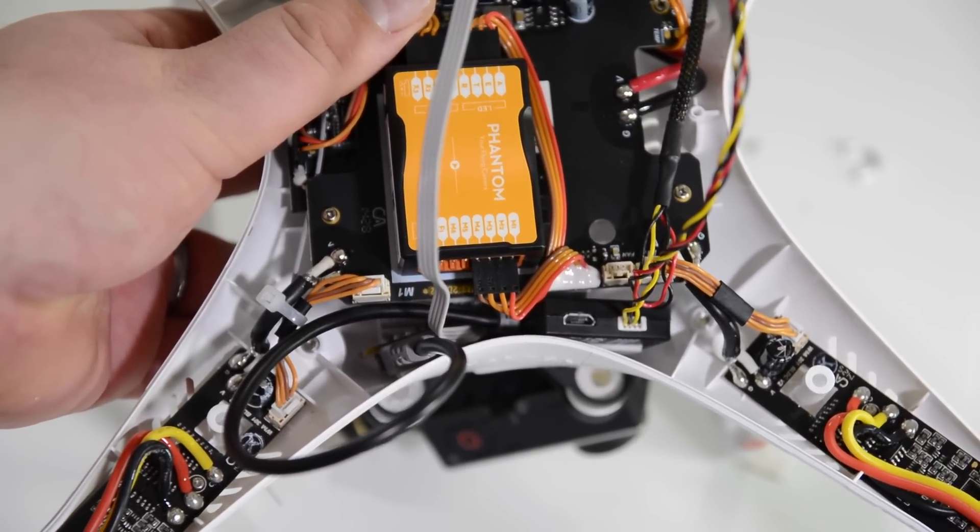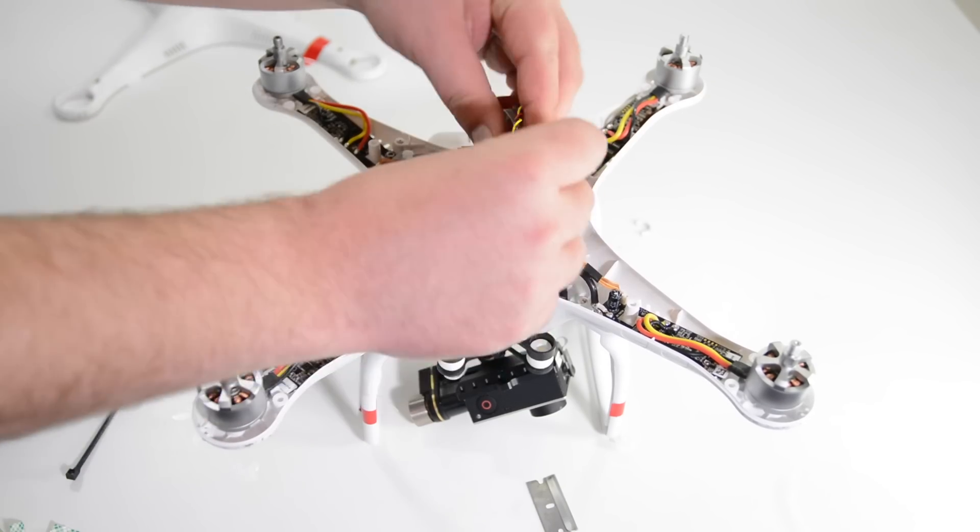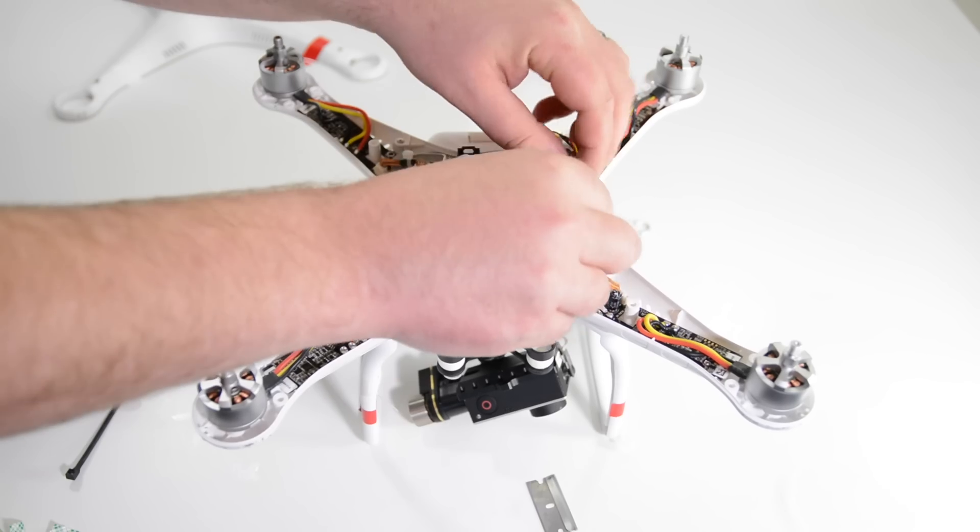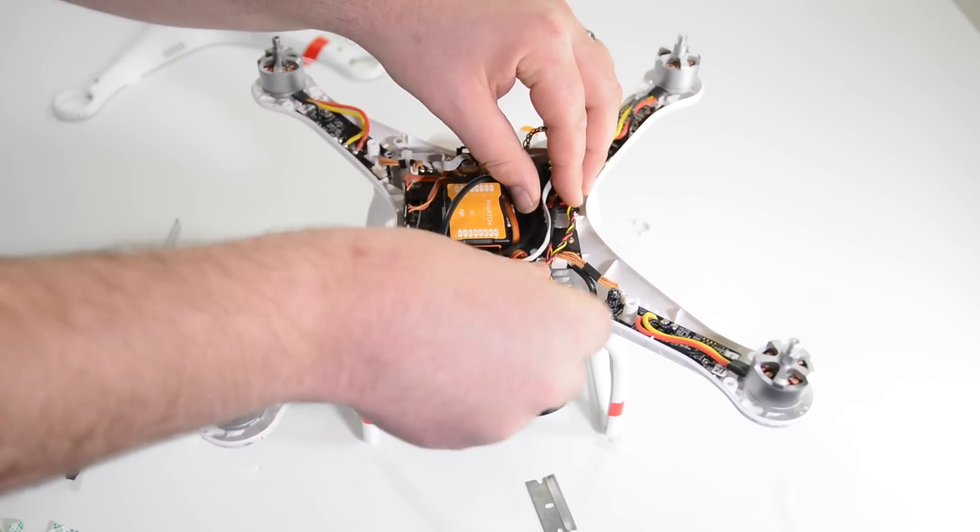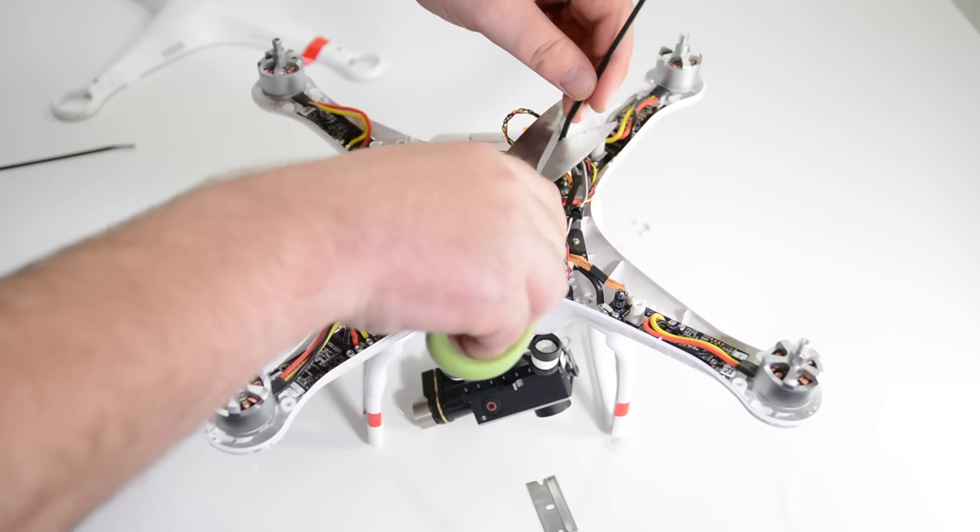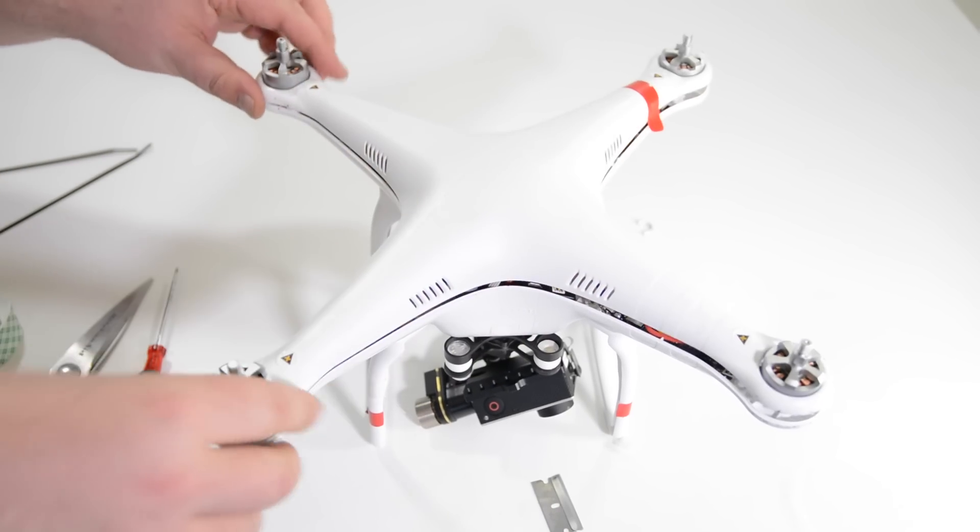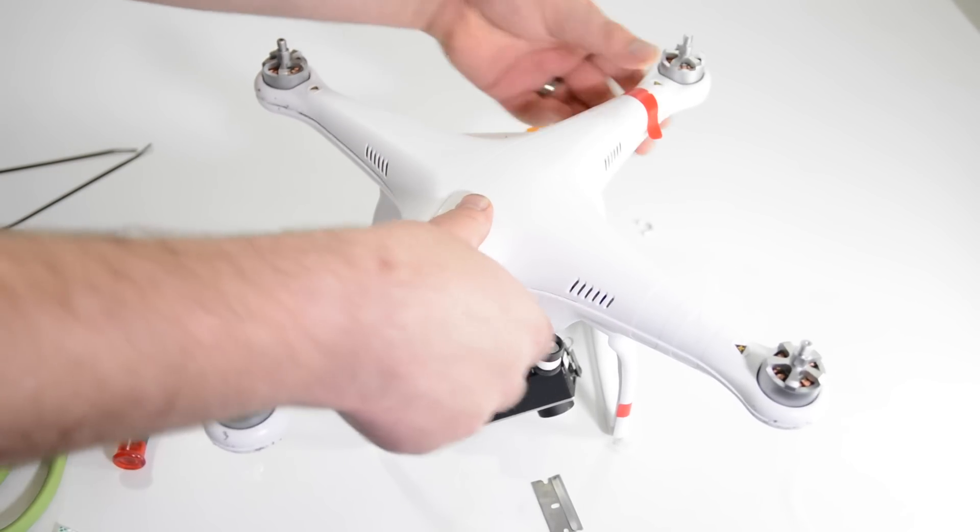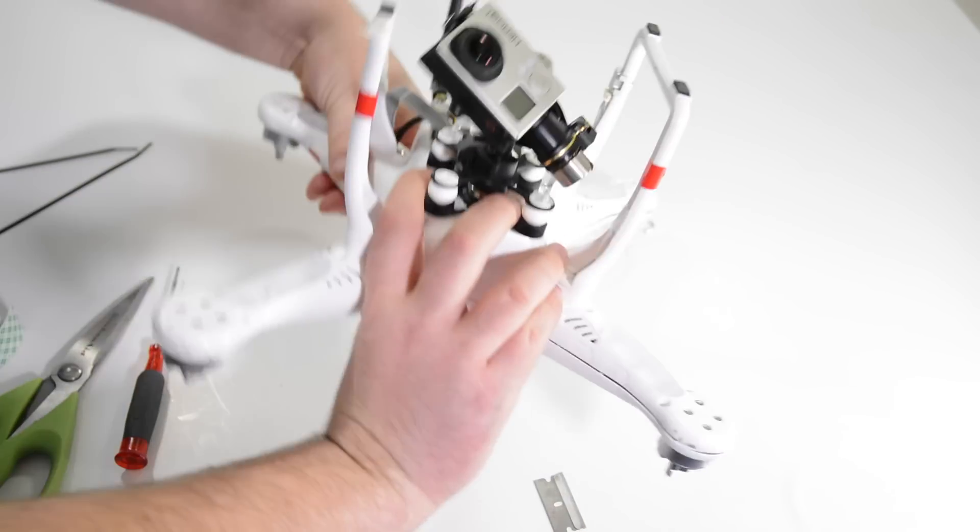And then with some zip ties I'll kind of get all these cables together and I'll zip tie them together just so they're neater and put together and now I'm ready to put the lid back on the quadcopter but do remember to plug in your GPS otherwise your quadcopter won't work so now we'll go ahead and put the 16 screws back into the quadcopter.